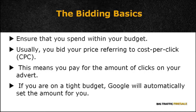Google allows you to pay the maximum bid amount for your chosen keyword. Or if you have a tight budget to keep, you can always choose the automatic option — Google will automatically select the bid amount for you within your budget, which is known as the maximum cost per click bid. Google will then provide you the most possible clicks within your budget.